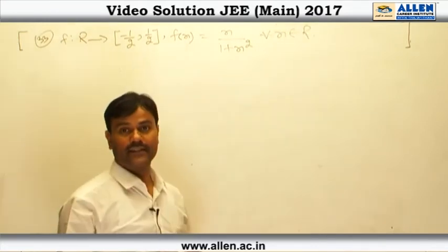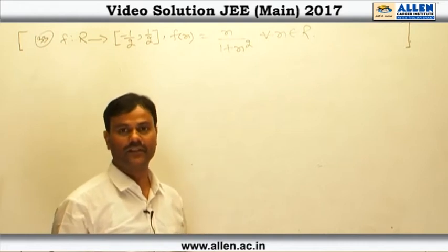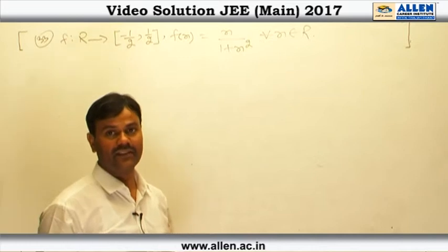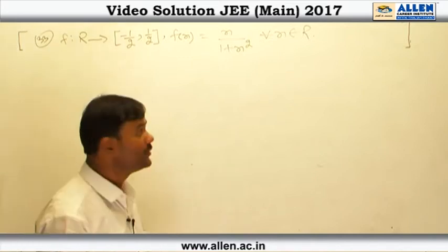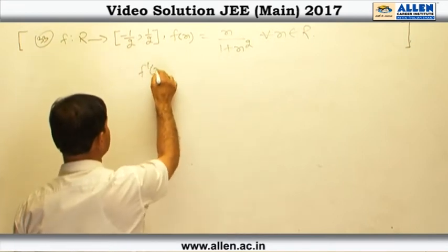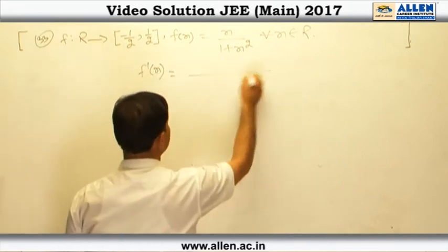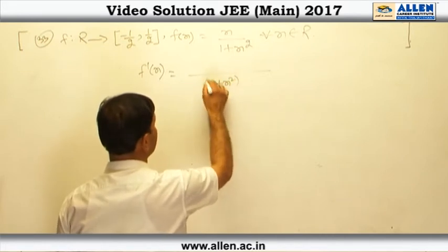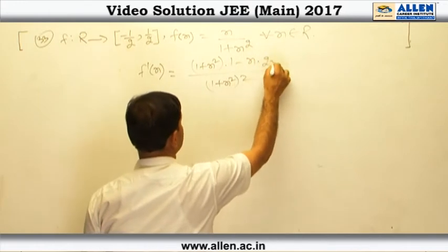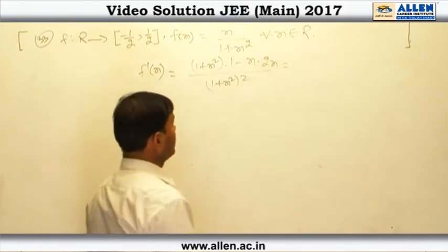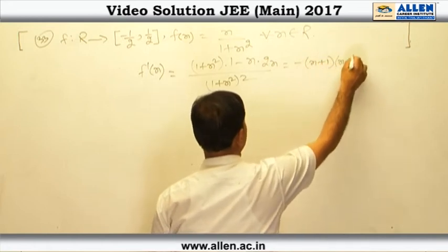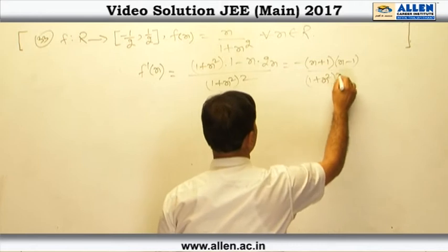We have to check the nature of the function — whether it is one-one or many-one — and also whether it is into or onto. For this, we find the derivative of the function. Applying the quotient rule, we get f'(x) = (1 - x²)/(1 + x²)², which simplifies to minus (x + 1)(x - 1)/(1 + x²)².